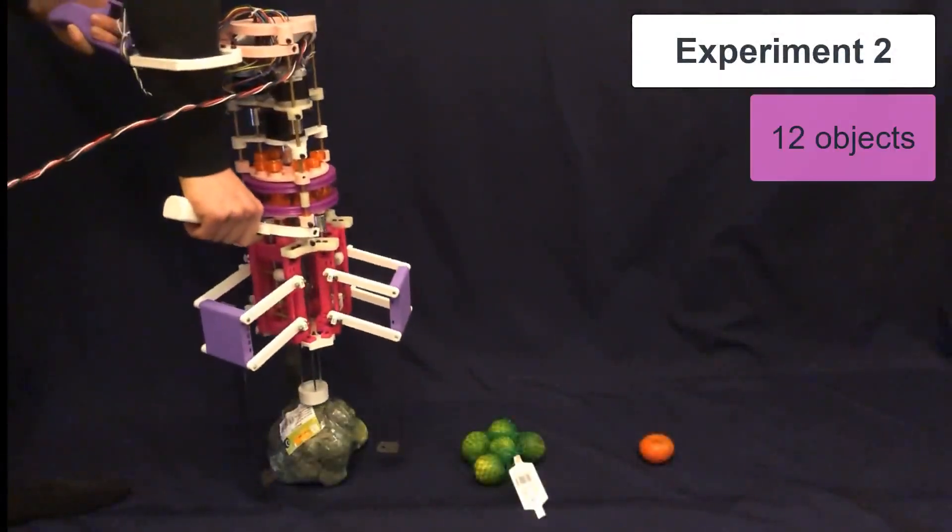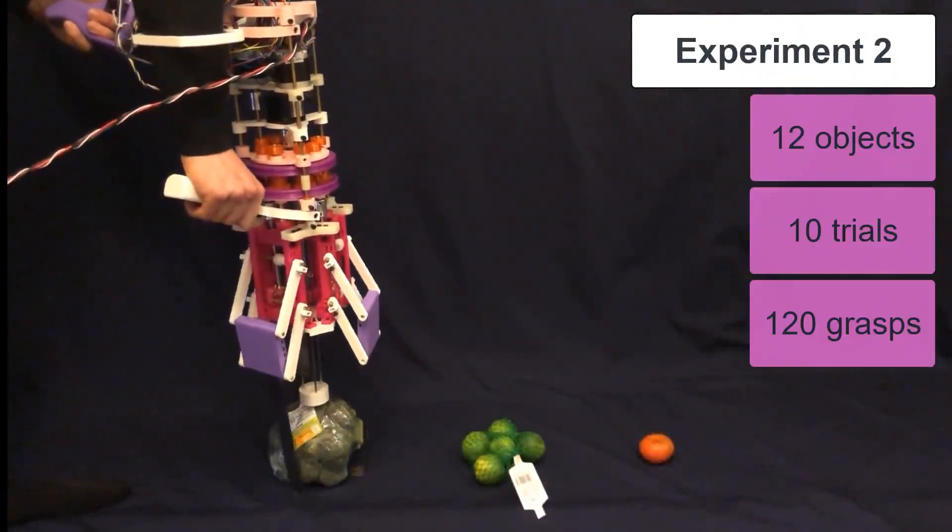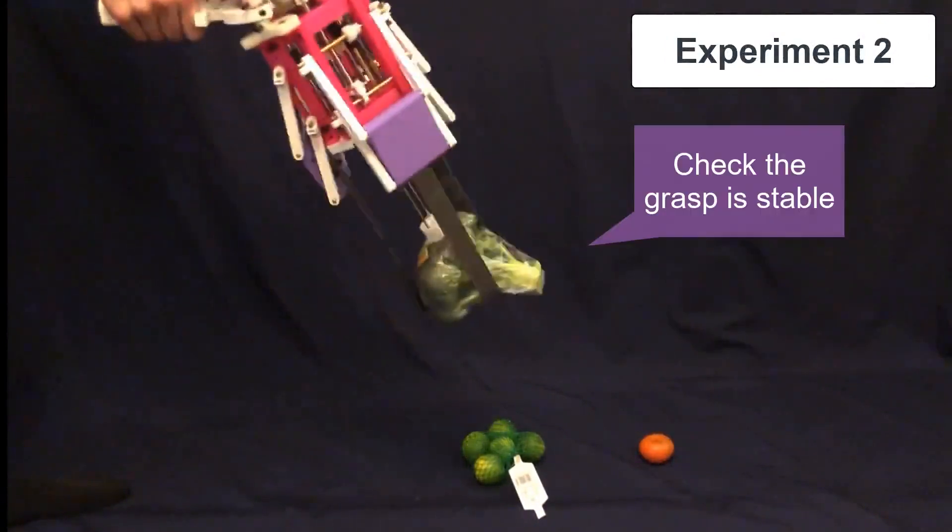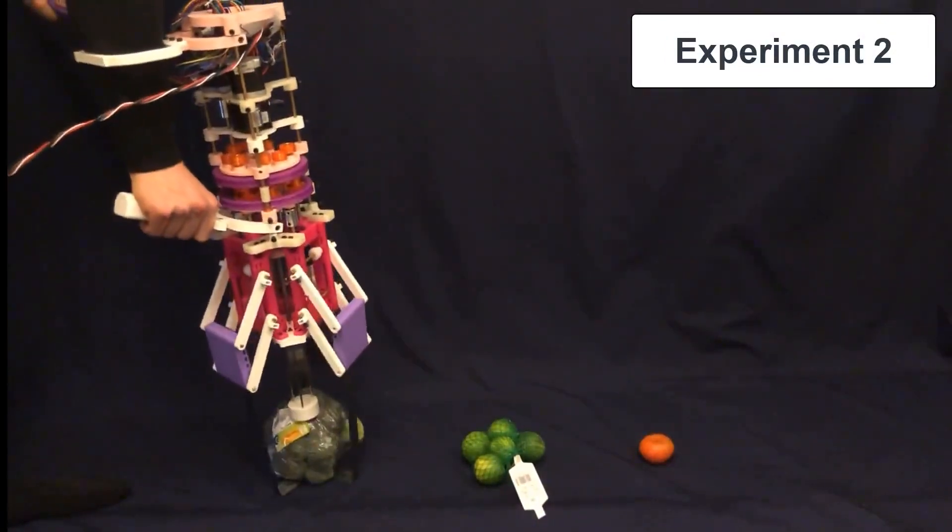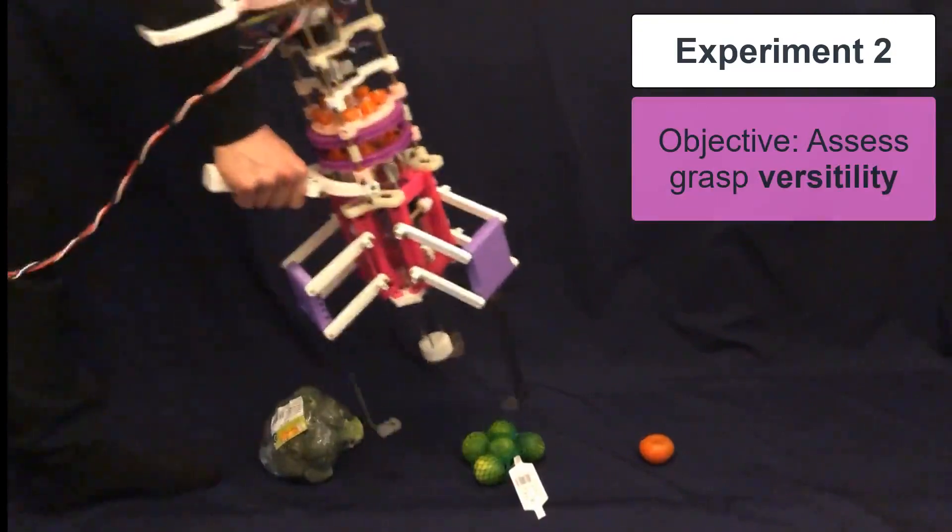Experiment two used 12 supermarket objects which were picked up from the floor. Grasps were checked and the process repeated to assess grasp versatility.